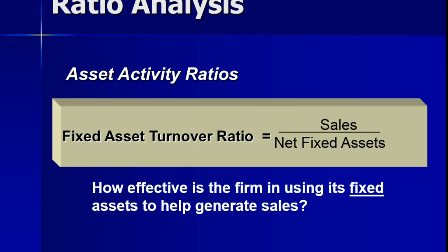Finally, asset activity ratios include the fixed asset turnover ratio. Here we look at just the fixed assets, not total assets — we take away current assets and just look at plant and equipment in relationship to sales, to see how effective the fixed assets are at generating sales.